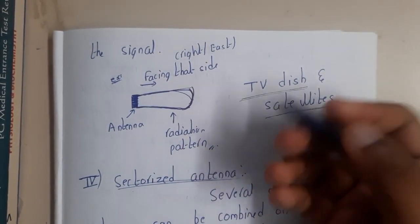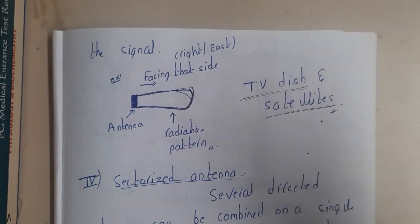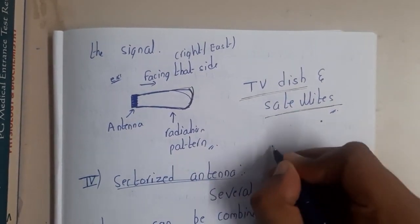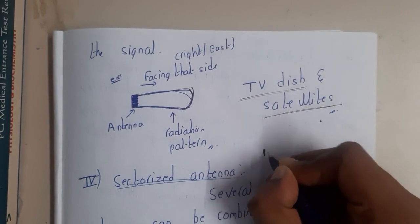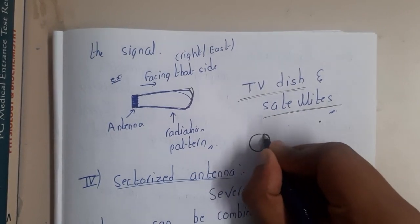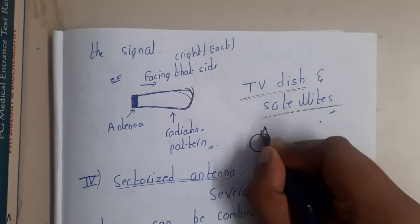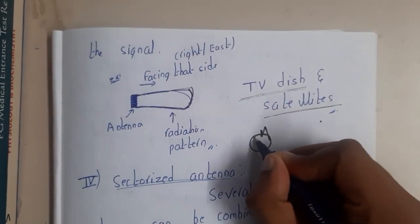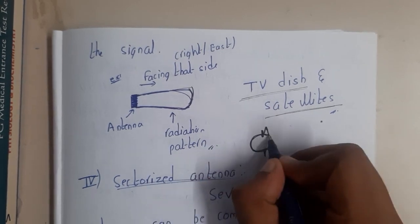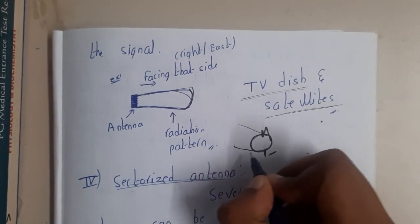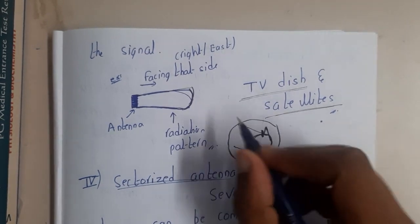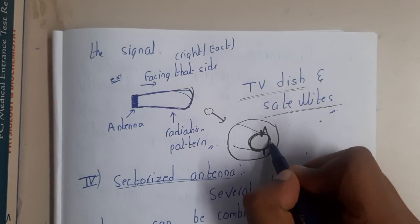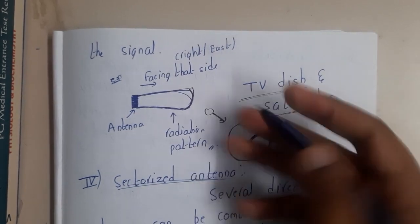When you established or initialized your dish, at that time you will be fixing it in one particular direction. It will be pointing towards one particular direction, because the direction from which the satellite gives the signals is fixed.